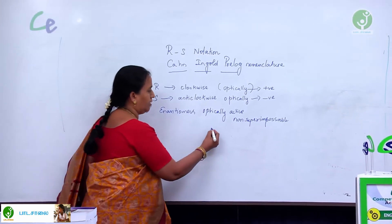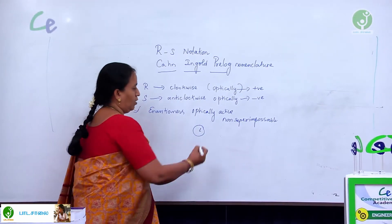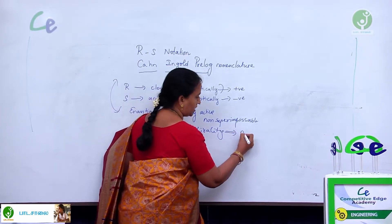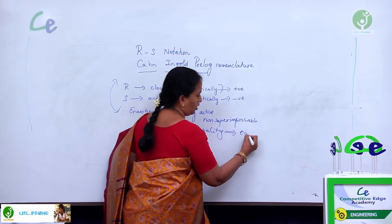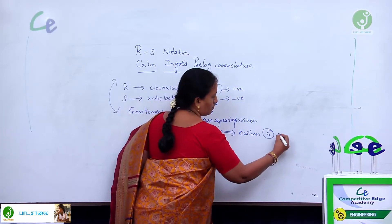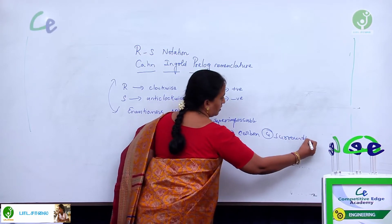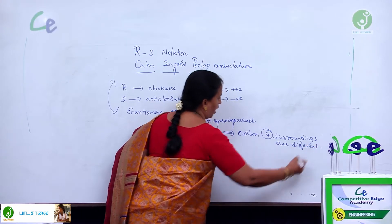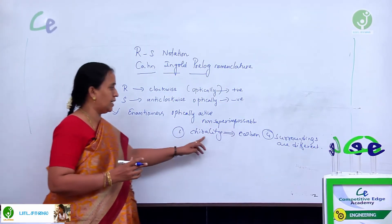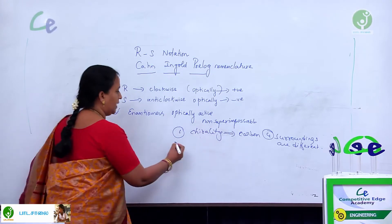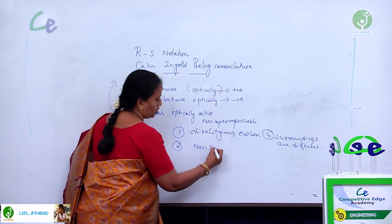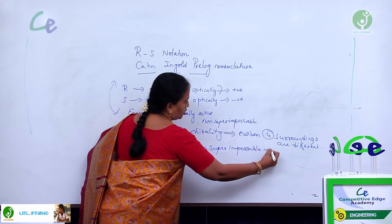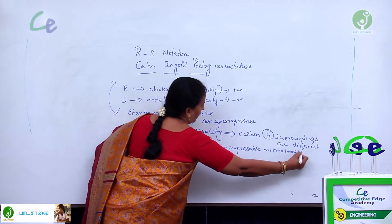What are the conditions that are needed for optical activity? One we are saying that it is chirality. What is chirality? Chirality is nothing but the carbon should have all the four surroundings as different ones. If you have four different groups attached with the carbon then we are calling that as a chiral center. Then the second condition is we are saying non-superimposable mirror images. These non-superimposable mirror images are called enantiomers.